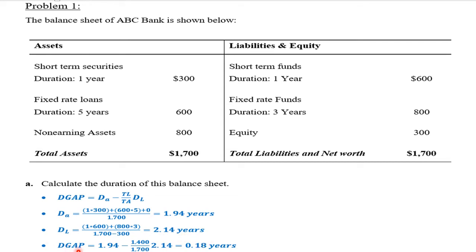The duration gap is 1.94 minus total liabilities (1,400) divided by total assets, times the duration of liabilities already calculated (2.14). The duration gap equals 0.18 years.